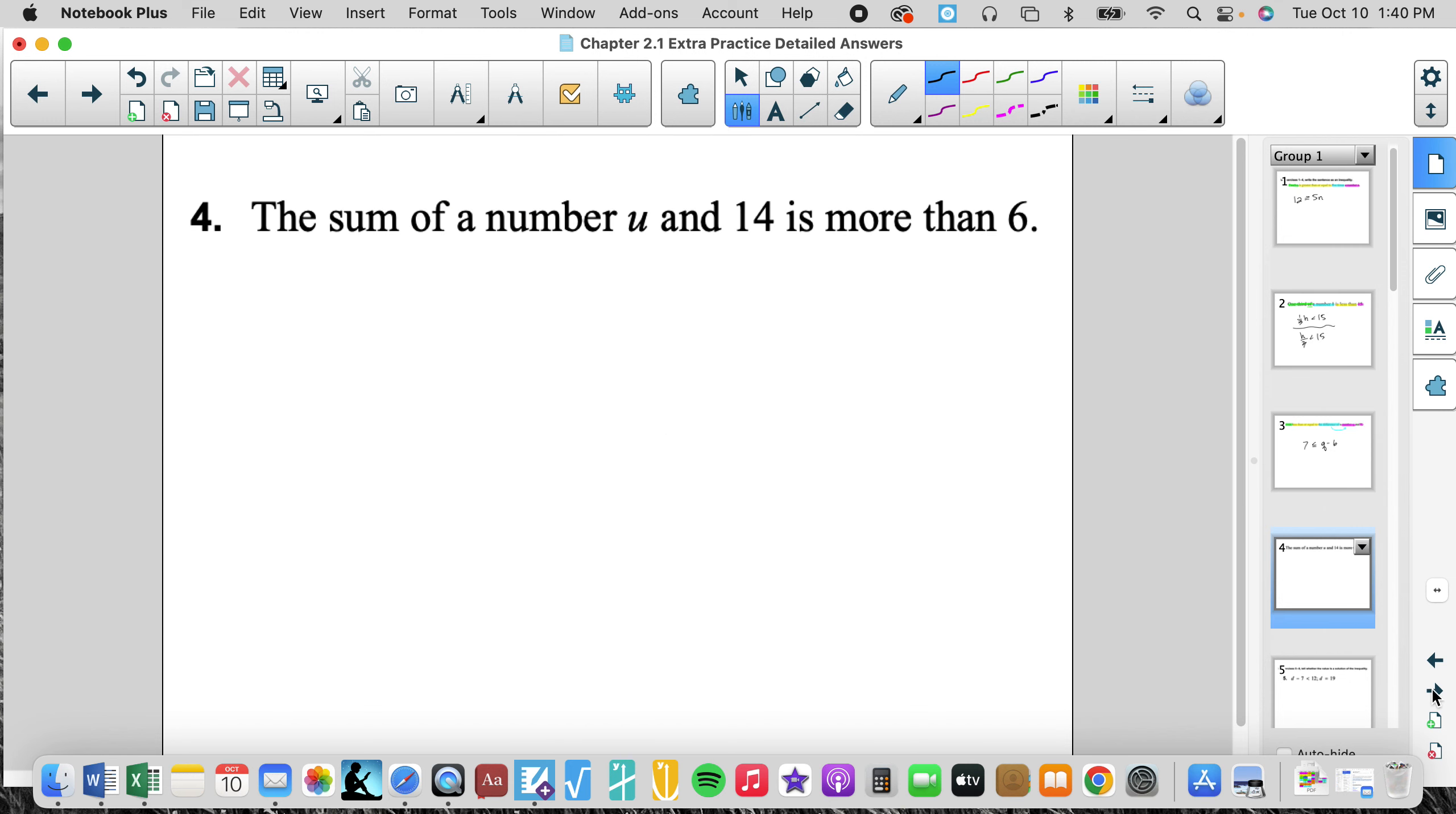Sum of a number u and 14 is more than six. So I'm going to look, is more than. And we have the sum. Sum of a number u and 14, so those two things. And then we have is more than six. So the sum of a number u and 14, that's the sum of those, is more than six. More than is greater than sign. So we like that as our inequality, u + 14 > 6.